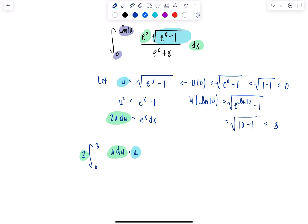And then the green, this is my 2u du. Almost there. And then in the denominator, we have e to the x plus 8. We'll come back over here. e to the x is equal to u squared plus 1, is it not? So just e to the x is u squared plus 1, and then you have plus 8.